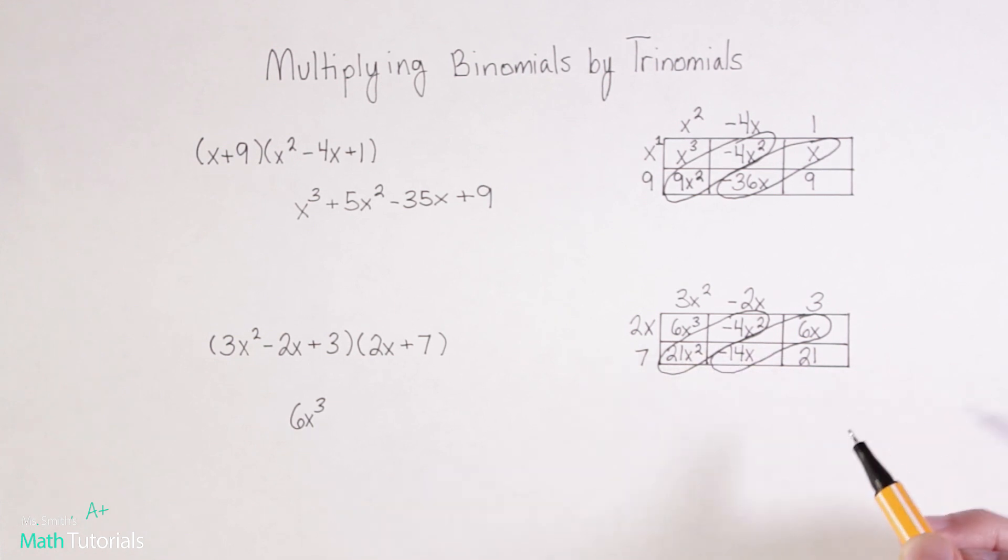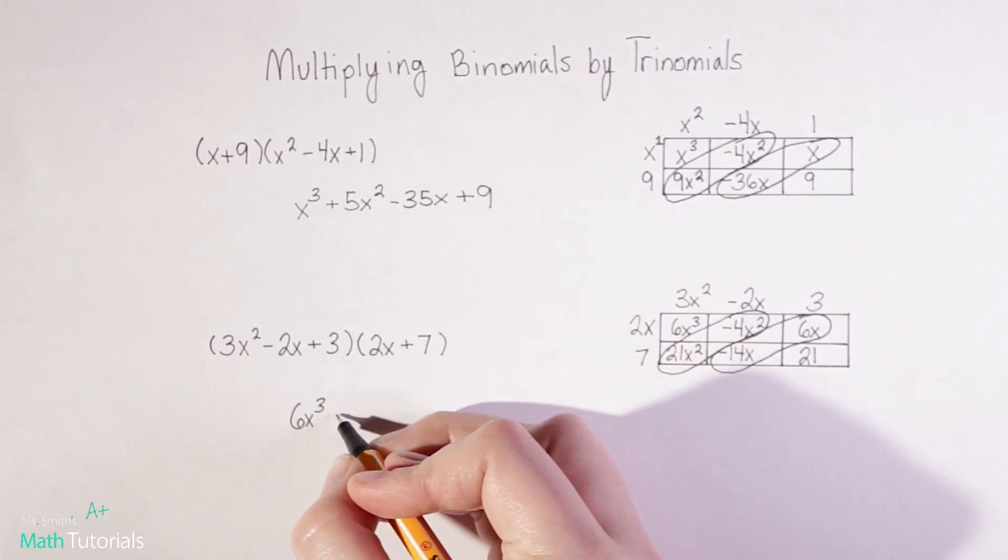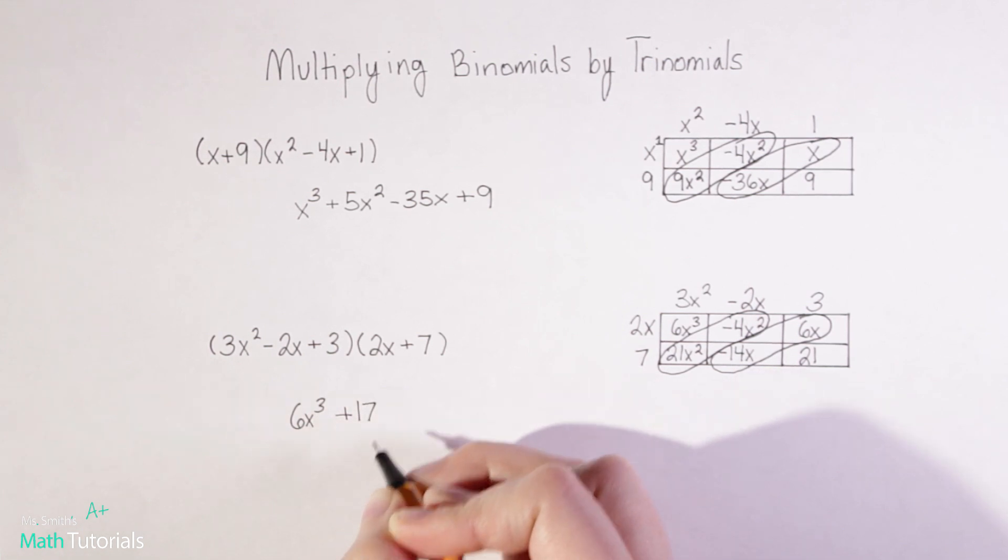You could also move top to bottom as well. Either way, you'll get the same answer. But I always like to move left to right like we read a book. So positive 21 minus 4 gives me positive 17x squared.